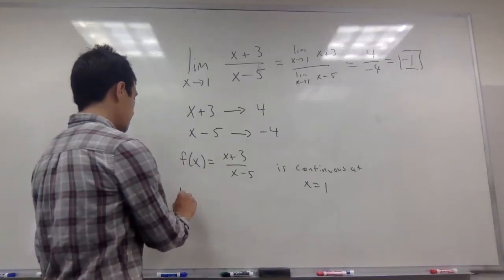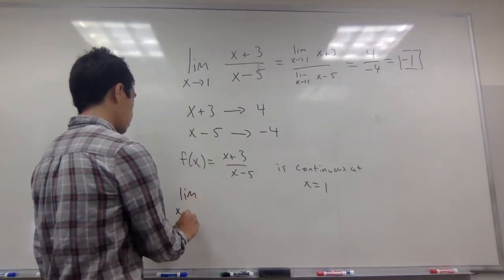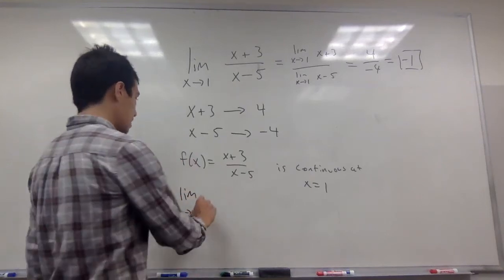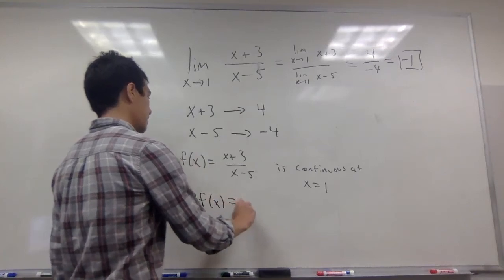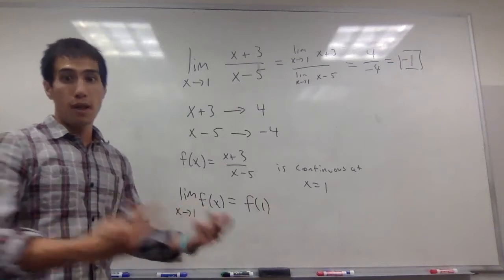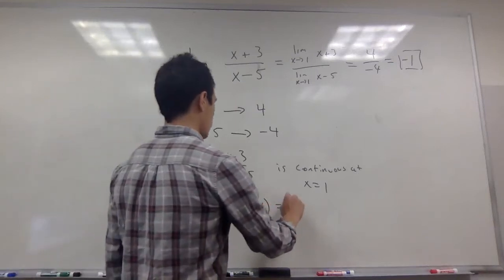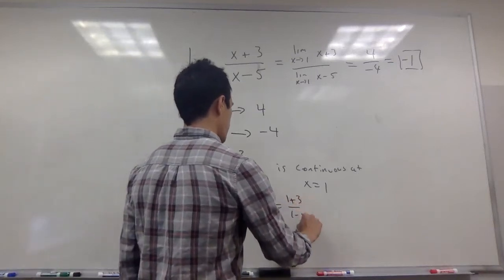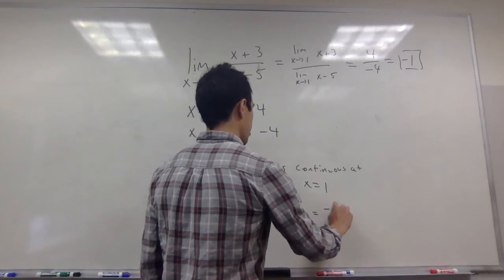And so this means that the limit as x goes to 1, using the definition of continuity of f of x, is equal to f of 1. And so it's equal to what happens if I just plug in 1. So this is equal to 1 plus 3 divided by 1 minus 5, which is negative 1.